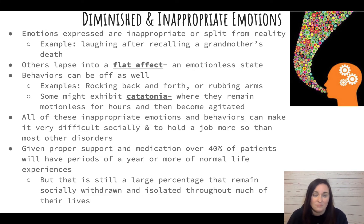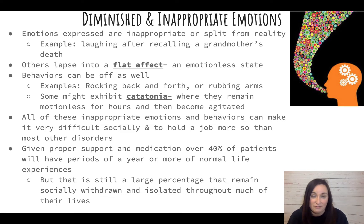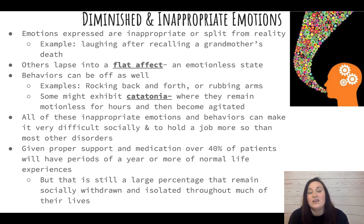Behaviors can be off as well. Some examples include rocking back and forth or rubbing their arms. Some can exhibit catatonia, where they remain completely motionless for many hours and then perhaps become agitated afterward. All of these inappropriate emotions and behaviors can make it very difficult to function socially or hold a job — more so than with other disorders.